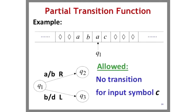Turing machines are deterministic. Thus, no lambda transitions are allowed. However, if there are no more transitions, even if there are inputs left on the tape, it is allowed. This is called a partial transition function.